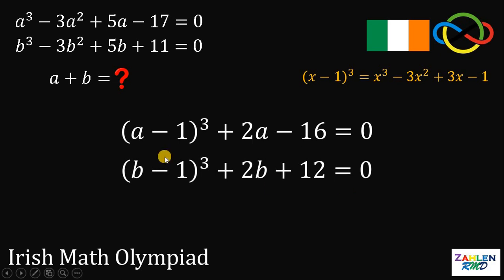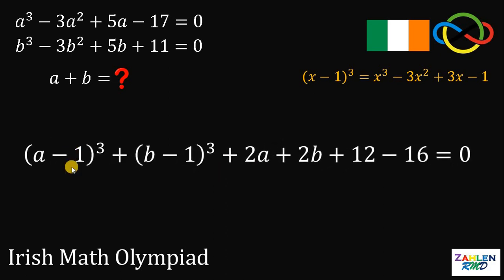So now, let's focus on what we want to find. We want A plus B. And notice that we have A and B on both equations. So what we're going to do is to add these two equations like this.